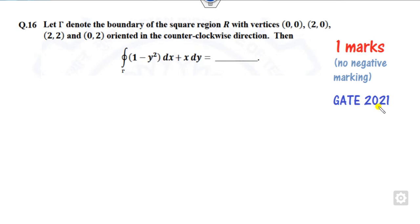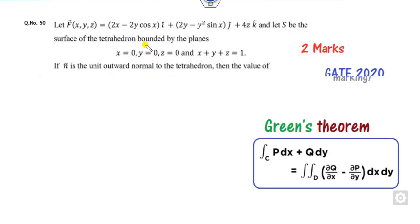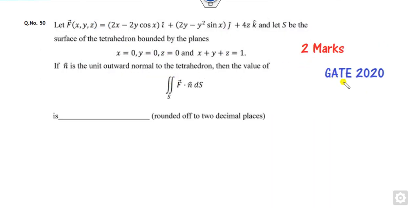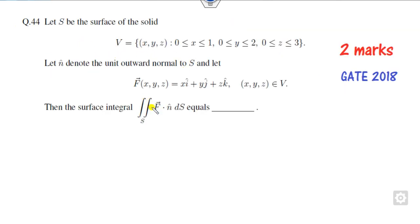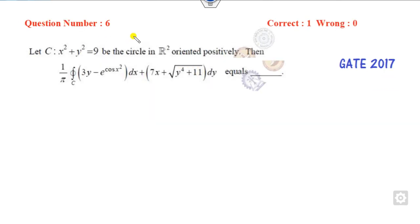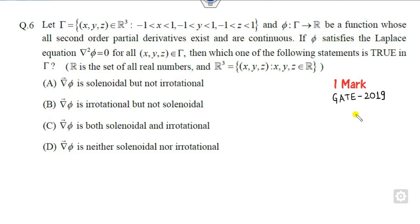The first question is of one mark, asked in GATE 2021, the most recent year. The second question is of two marks from GATE 2020, question number 50, which is on double integration of the surface. Next, question number 17, again one mark from GATE 2019, is on the closed line integral. Question number 44 is again on double integration from GATE 2018, carrying two marks. The final question is number 6 from GATE 2017, one mark, on the line integral. There is one more question from GATE 2019 — question number 6 — related to solenoidal, irrotational, and so on.